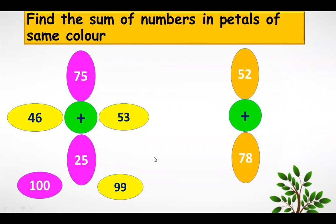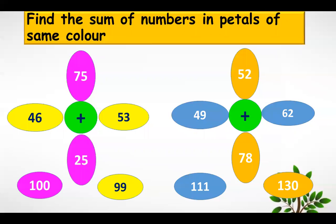Do the next one. 52 plus 78. 49 plus 62. The sum of 52 plus 78 is 130 and 49 plus 62 is 111.